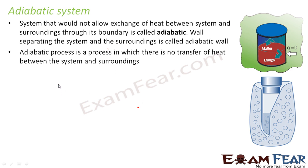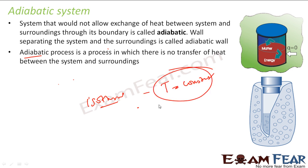I just want to tell you that adiabatic and isothermal are two different things. In adiabatic, there is no exchange of heat — it is totally isolated. In isothermal, we maintain the same temperature. Temperature has to be constant; maybe we have to supply extra heat also if required — that is isothermal. Adiabatic is a totally isolated system where we don't transfer any heat to the system, nor is heat transferred from the system.